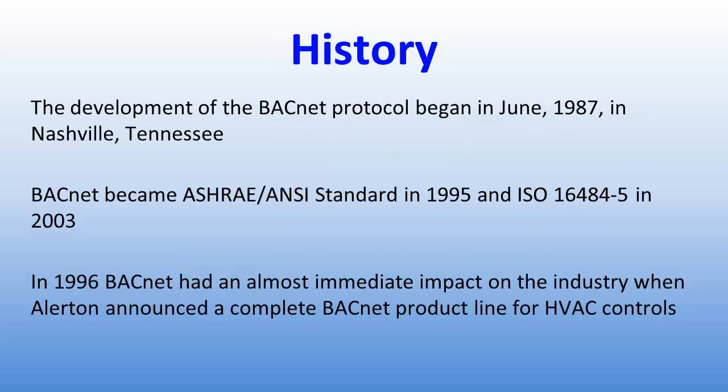The development of the BACnet protocol began in 1987 in Nashville, Tennessee, at the inaugural meeting of the Standards Project Committee. The committee worked to reach consensus using working groups to divide up tasks in creating standards. The working groups focused on specific areas and provided information and recommendations to the main committee. The first three working groups were the Data Type and Attribute Working Group, Primitive Data Format Working Group, and the Application Services Working Group.